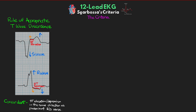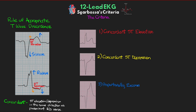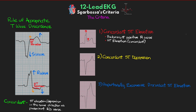On to the criteria. We have three criteria we are evaluating: concordant ST elevation, concordant ST depression, and proportionally excessive discordant ST elevation. Starting with concordant ST elevation — we would have a predominantly positive R-wave, and instead of the J-point being pulled towards a negative T-wave giving us ST depression, we actually have ST elevation that is concordant, in the same direction as that R-wave. If we have at least one millimeter of concordant ST elevation in at least one lead anywhere on the EKG, that would indicate STEMI. This criterion has the greatest specificity.